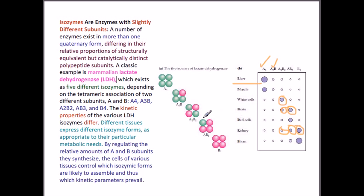The isozyme form depends on the type of function needed and the efficiency required inside the cell. By regulating the relative amounts of A and B subunits, cells synthesize different isozymes. Importantly, the kinetic parameters also change with the isozyme form — affinity for substrate, effectivity, and productivity all vary.